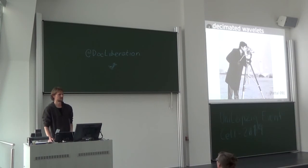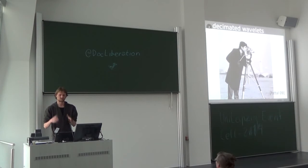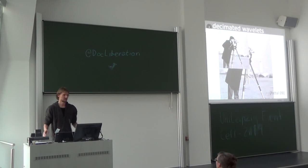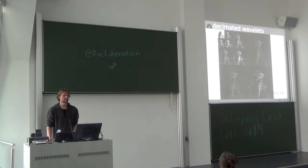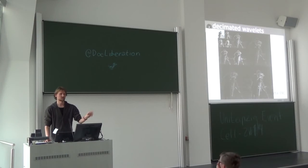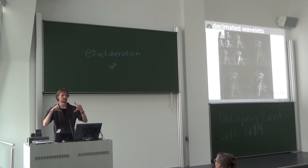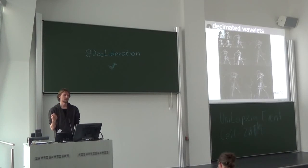Most of you will have seen pictures like this before — a classic image processing example. What wavelets basically do in their simplest incarnation is decimated wavelets. For this kind of multi-resolution analysis, you just take your picture and downscale it by a factor of two, and again, and again, until you're at the coarsest level. That's your coarse representation. To come back to the full picture, you just add on all the details as well.